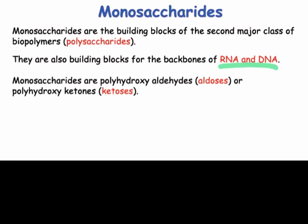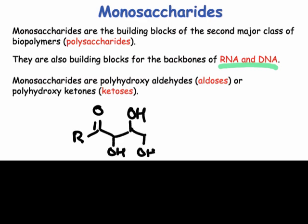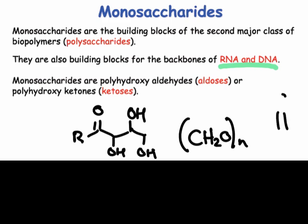Structurally, monosaccharides consist of an aldehyde or ketone attached to a contiguous series of CHOH groups. On the whole, they always possess the formula (CH₂O)ₙ, and you can think of them as oligomers of formaldehyde, the simplest aldehyde.